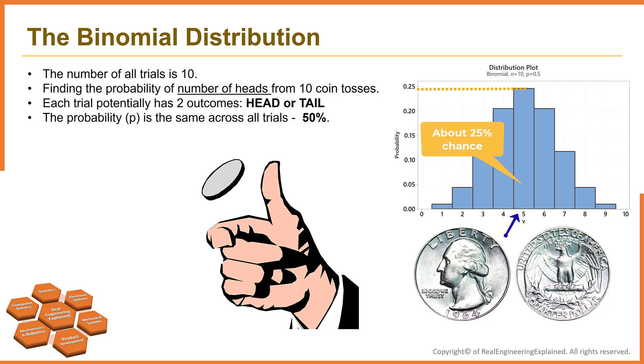It is less probable to have just one event of head or 9 events of heads in 10 trials. When you toss a coin, potentially you have two outcomes, head or tail, and the probability is the same across all trials, and it's 50%.